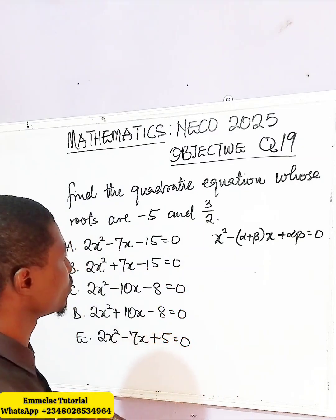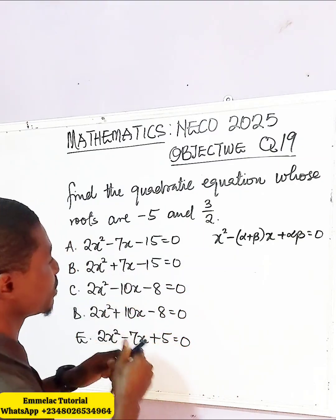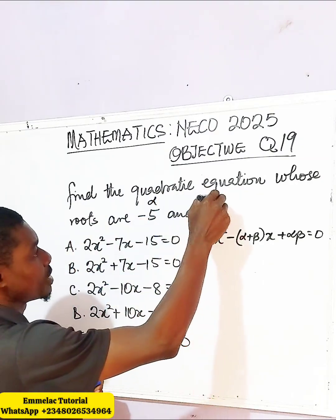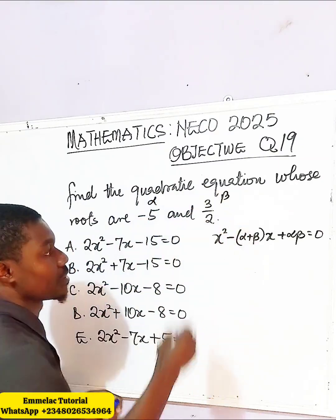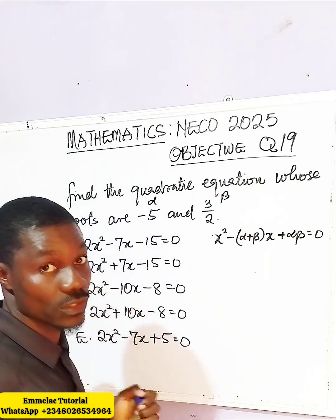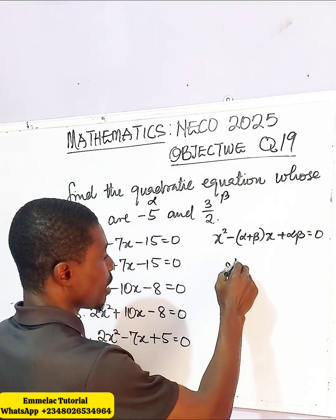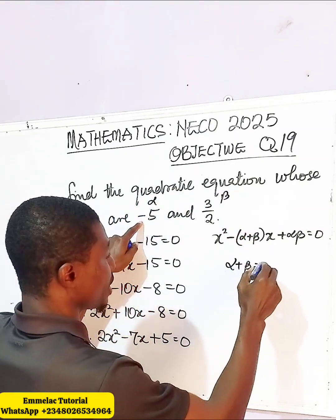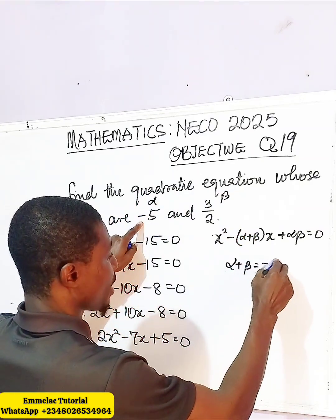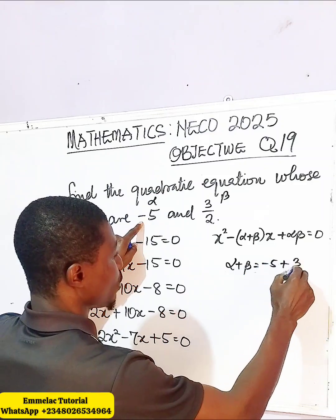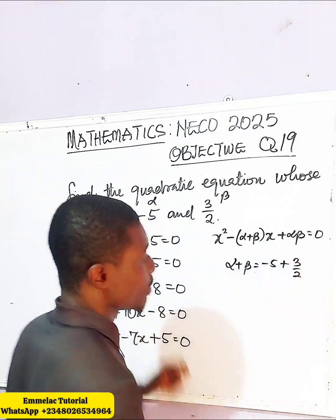Let's make this alpha and let's make this beta. Let us find the sum. The sum will be alpha plus beta, giving us negative 5 plus 3 over 2.